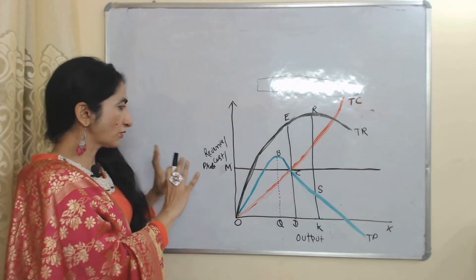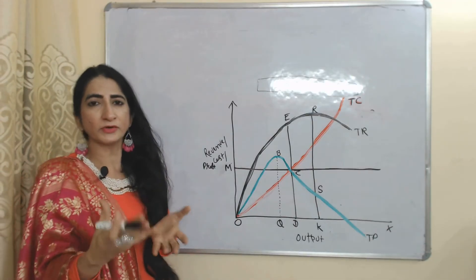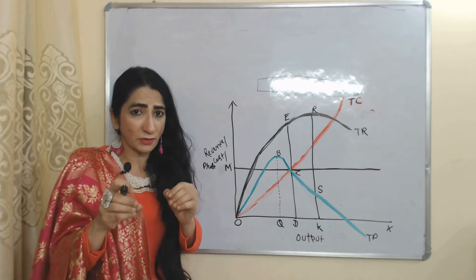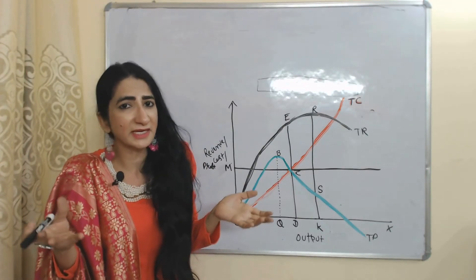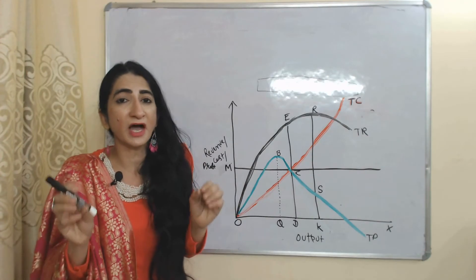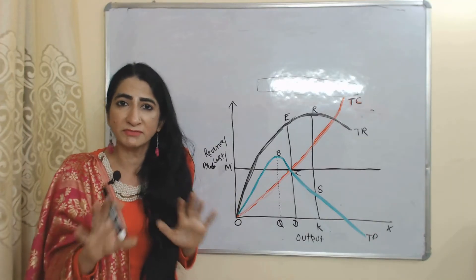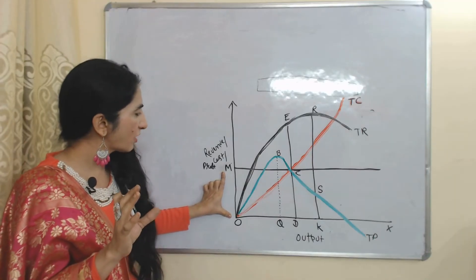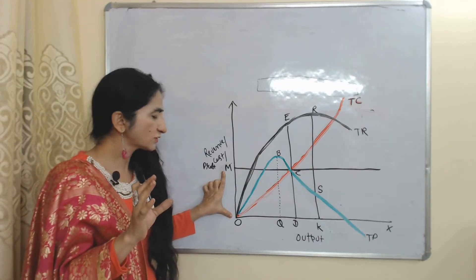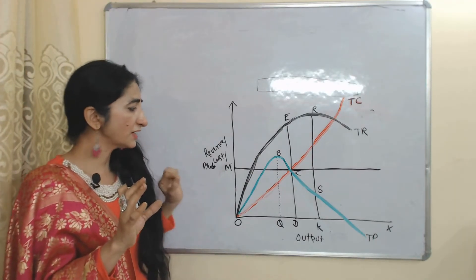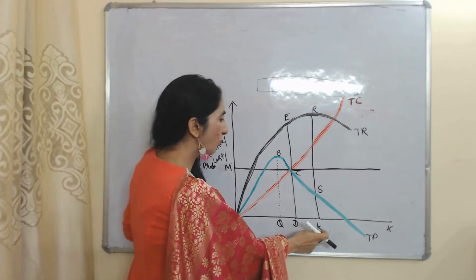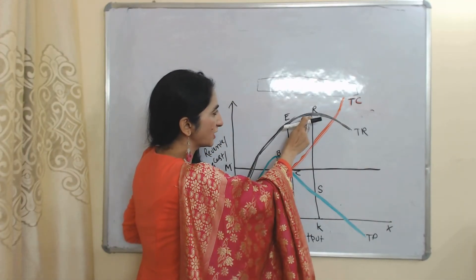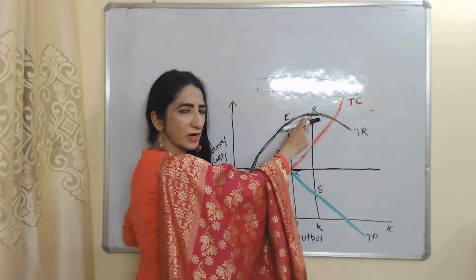According to this model, the firm wants to increase their sales volume and maximize their revenue through sales without doing any compromise with the minimum amount of profit. We assume our minimum amount of profit is OM. The revenue maximization output is OQ, and at OQ output you can see at point R our revenue is maximum.